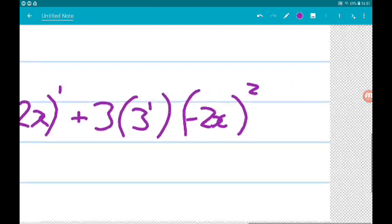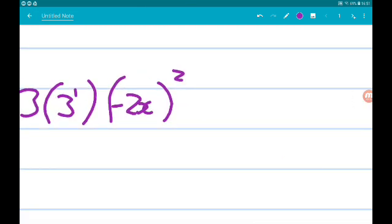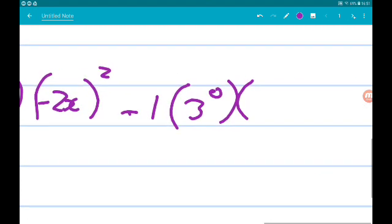And then the final term is add 1. The power of 3 goes down. The power of minus 2x goes up.